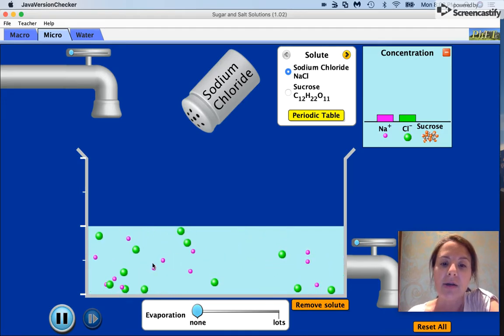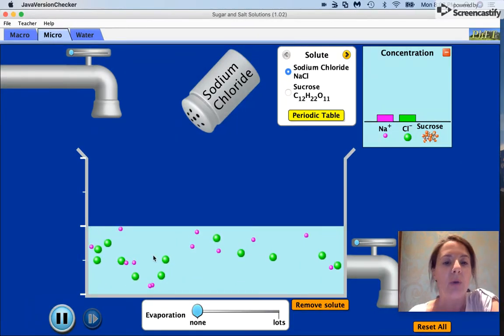So the cations would be that sodium ion and the chlorine would be the anion, the negative ion, and those are all now mobile.